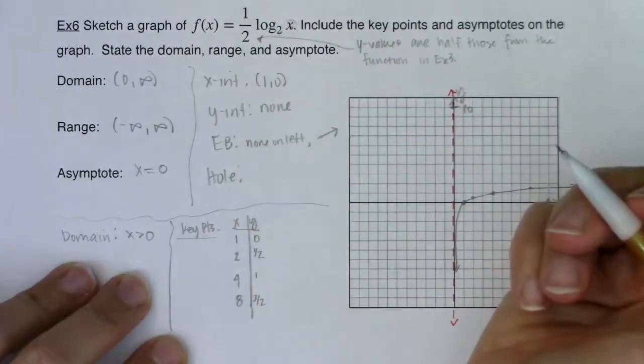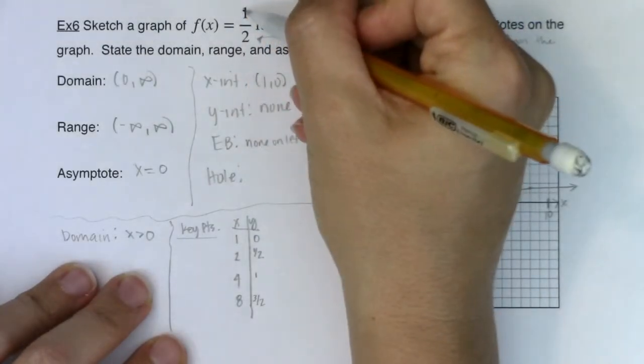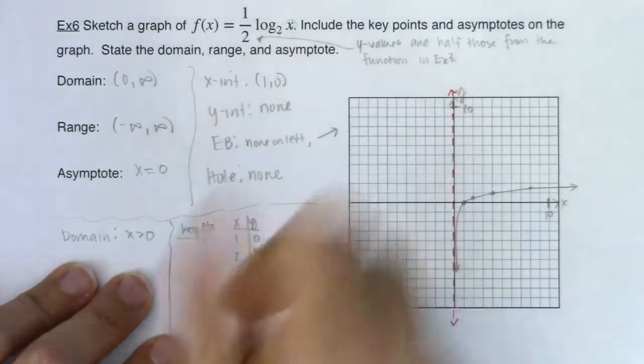For holes, you have to have fractions. And we do have a fraction. But I don't have a factor that's common to the numerator and denominator that would cancel out. So I've got no holes.